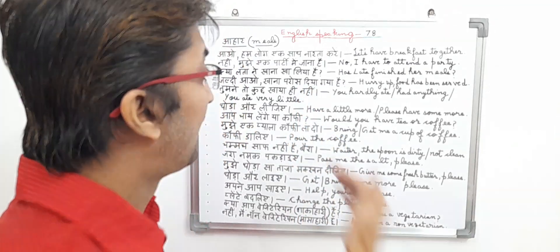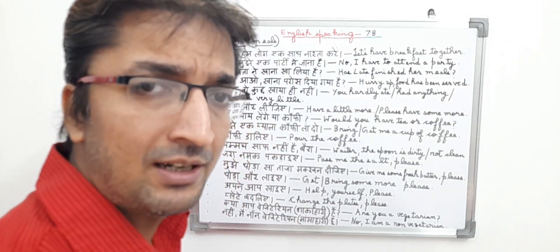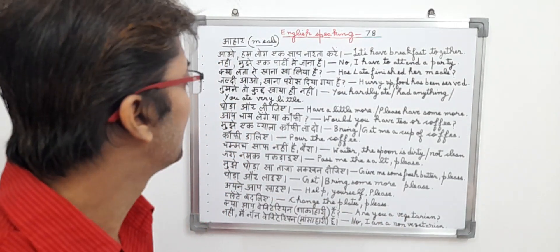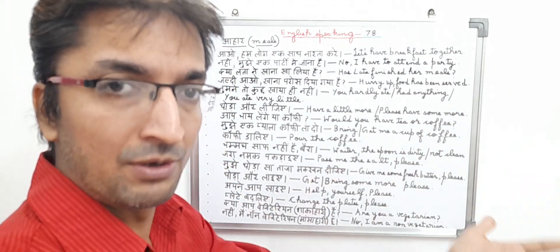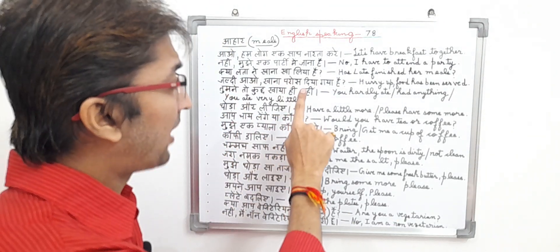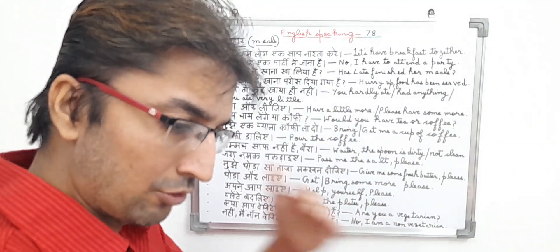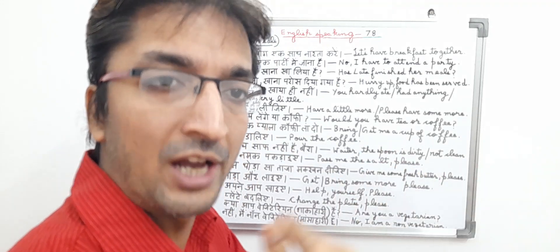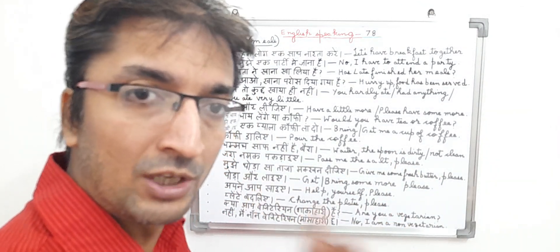In English, it means 'Has Lata finished her meals?' The sentence is an interrogative type because the person is asking about another person. He is very much curious about another person — whether she has taken her food or not. So the person is curious about whether she has taken her meals on time or not. It is a meal type and interrogative type sentence.